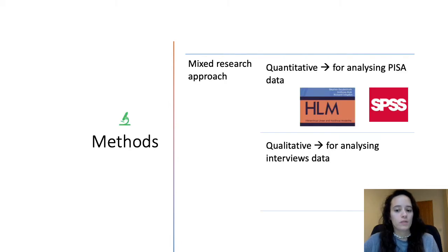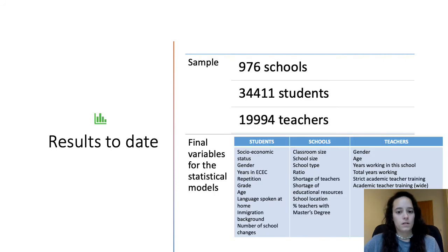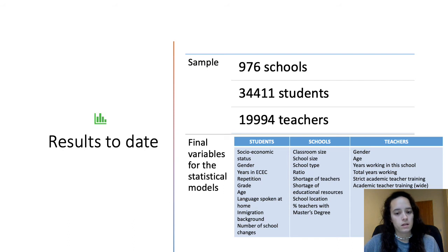In order to achieve these objectives, we proposed a mixed approach combining quantitative and qualitative methodologies — quantitative for analyzing PISA data and qualitative for analyzing interview data. Our sample is made up of 976 schools, more than 34,000 students, and almost 20,000 teachers. We are not going to include in the analysis variables with more than 20% of missing values, so we deleted the percentage of teachers with PhD studies.